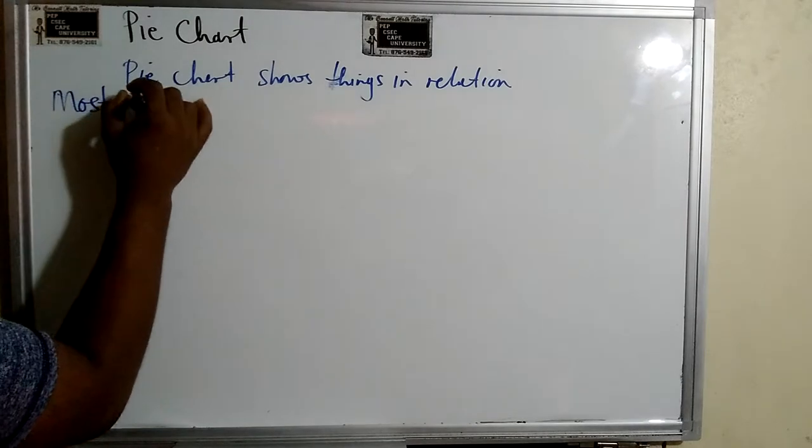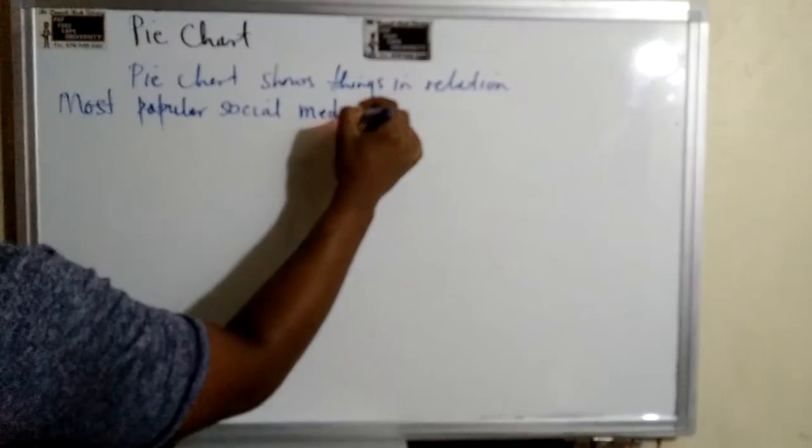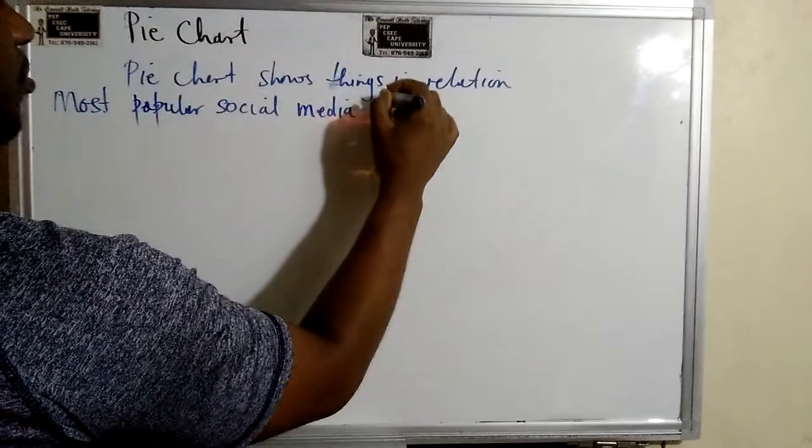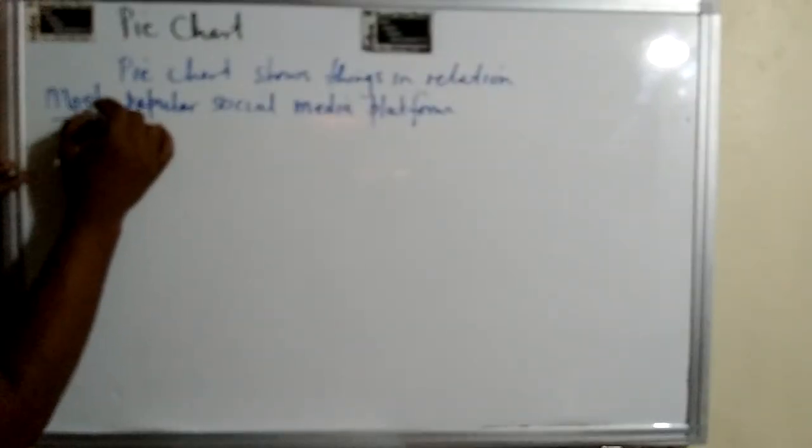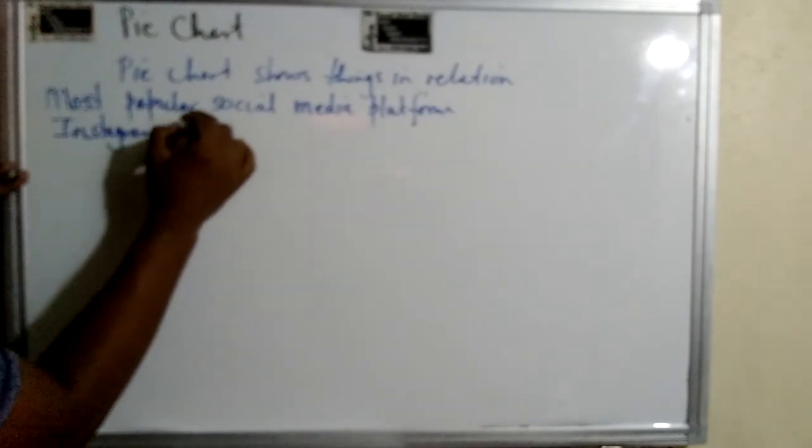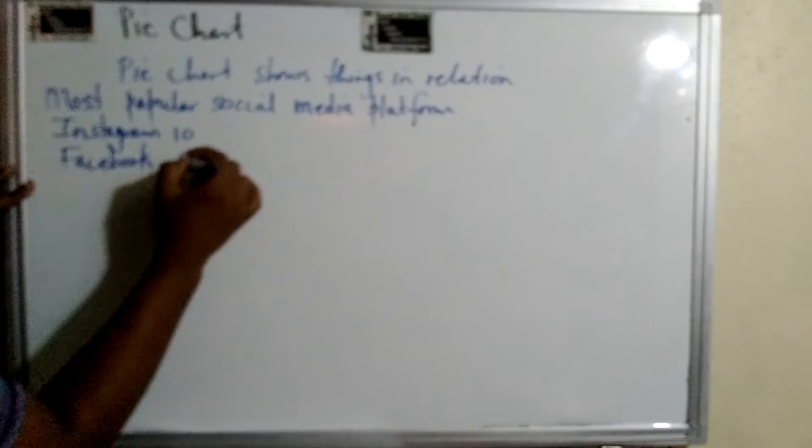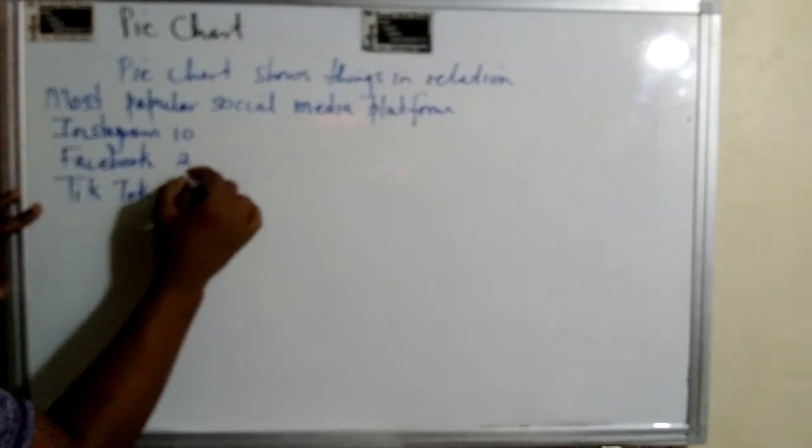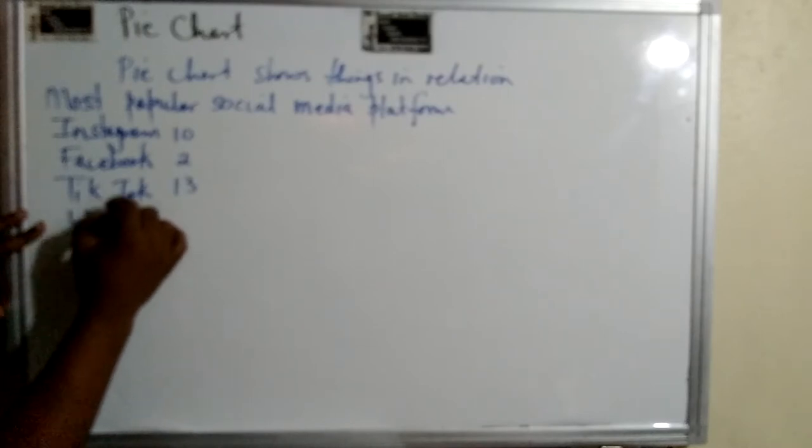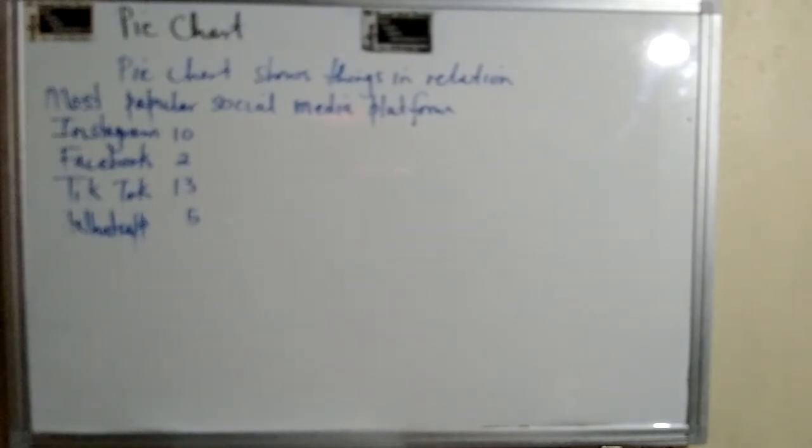So these were the votes. And this is what the class voted for. So let me just write Instagram. We got 10 votes. Facebook, surprisingly, got two. When I asked them about what it is, they said Facebook for the old people. So TikTok, the new sensation got 13. And WhatsApp. I was surprised that WhatsApp only got 5 because everyone used WhatsApp. But it was more like to them in terms of quality or whatever. Not just use.